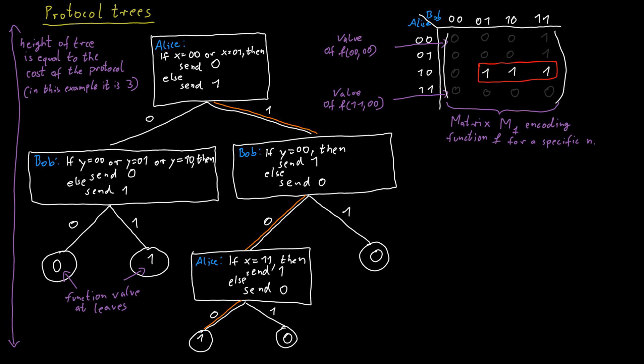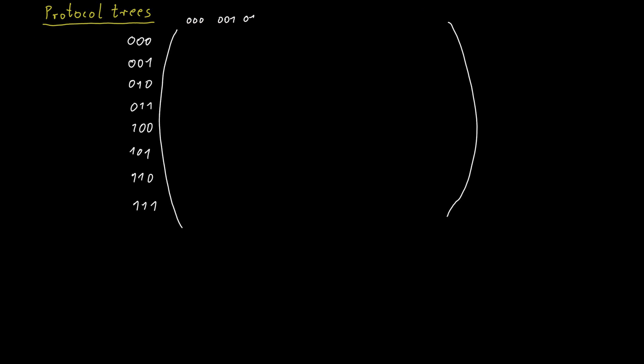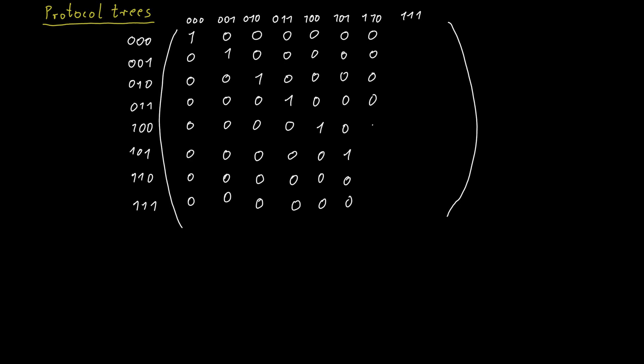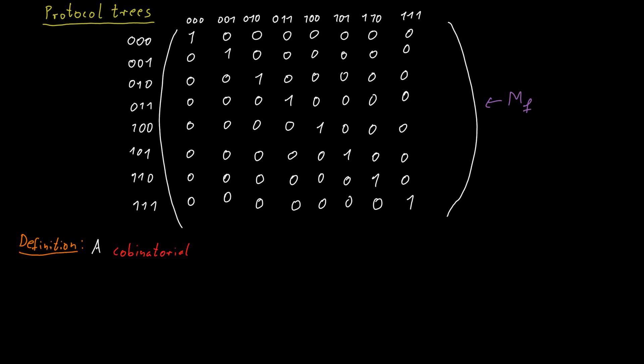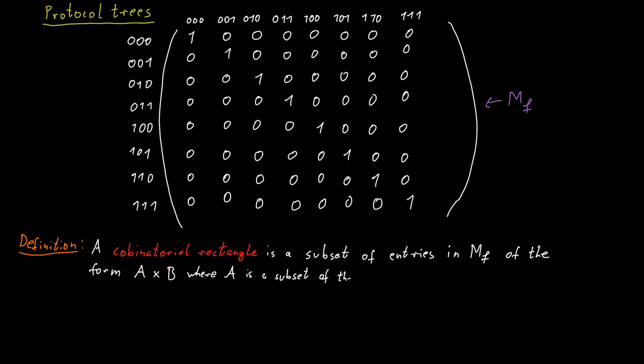We should observe that the entries in the matrix that we have not excluded yet at every stage of this computation form a sort of rectangle. In general the rectangles could be somewhat disconnected, so we call this a combinatorial rectangle — rectangles up to reorderings of the columns and rows. Let the matrix M_f be the matrix arising from function f. A combinatorial rectangle is a subset of entries of M_f of the form A × B, where A is a subset of the rows and B is a subset of the columns.